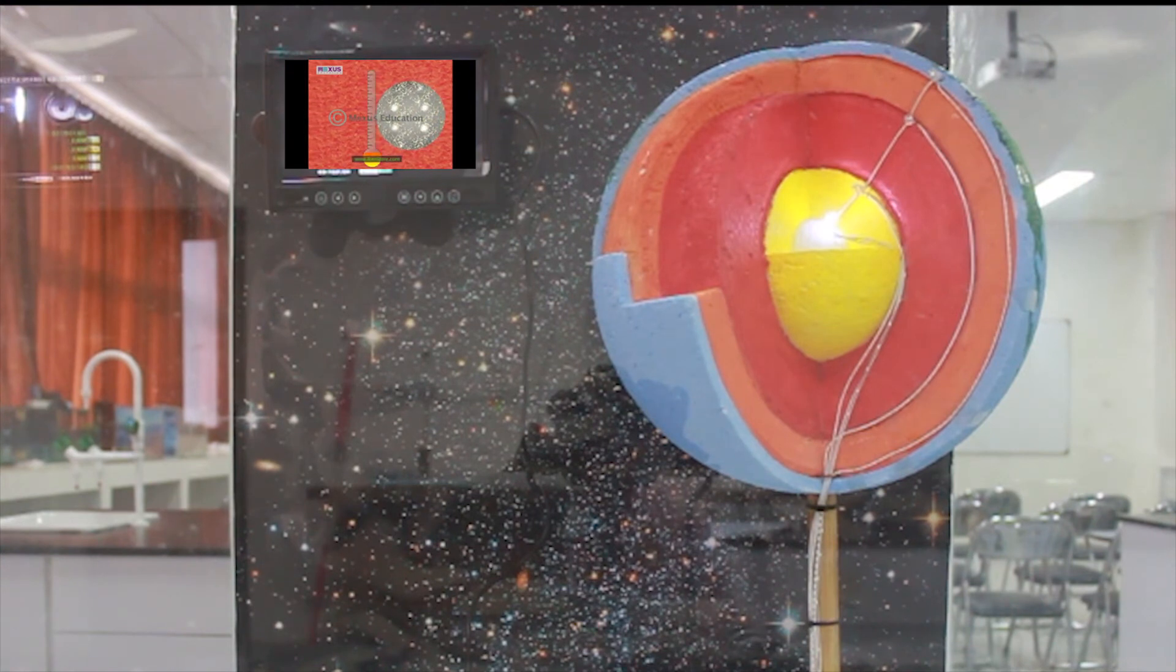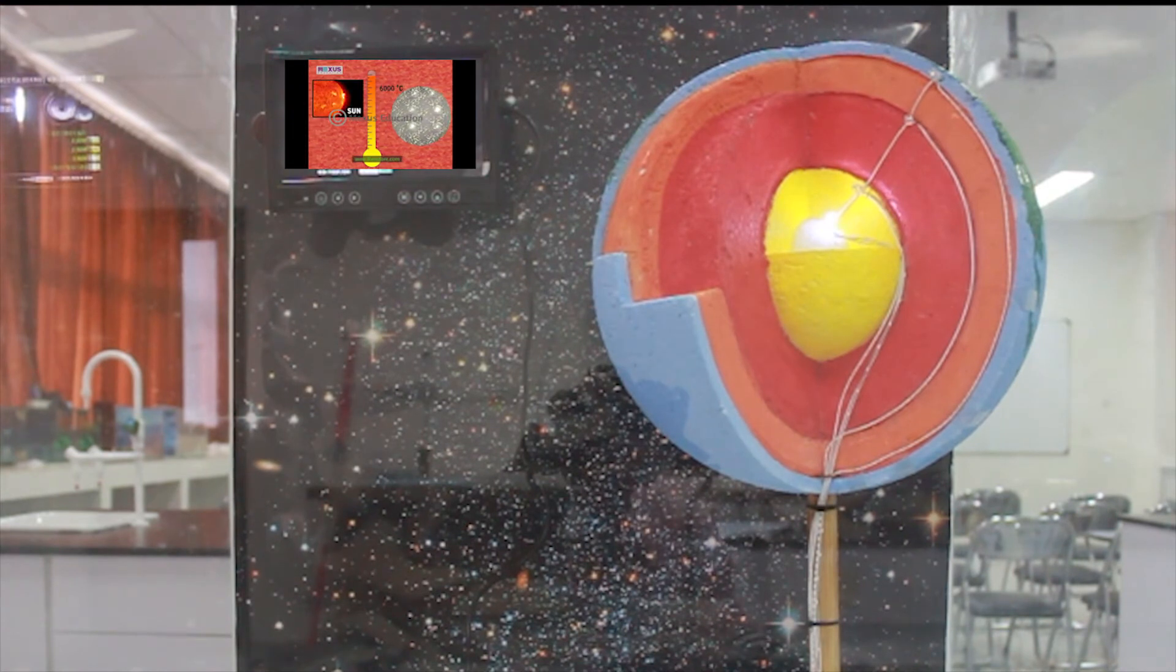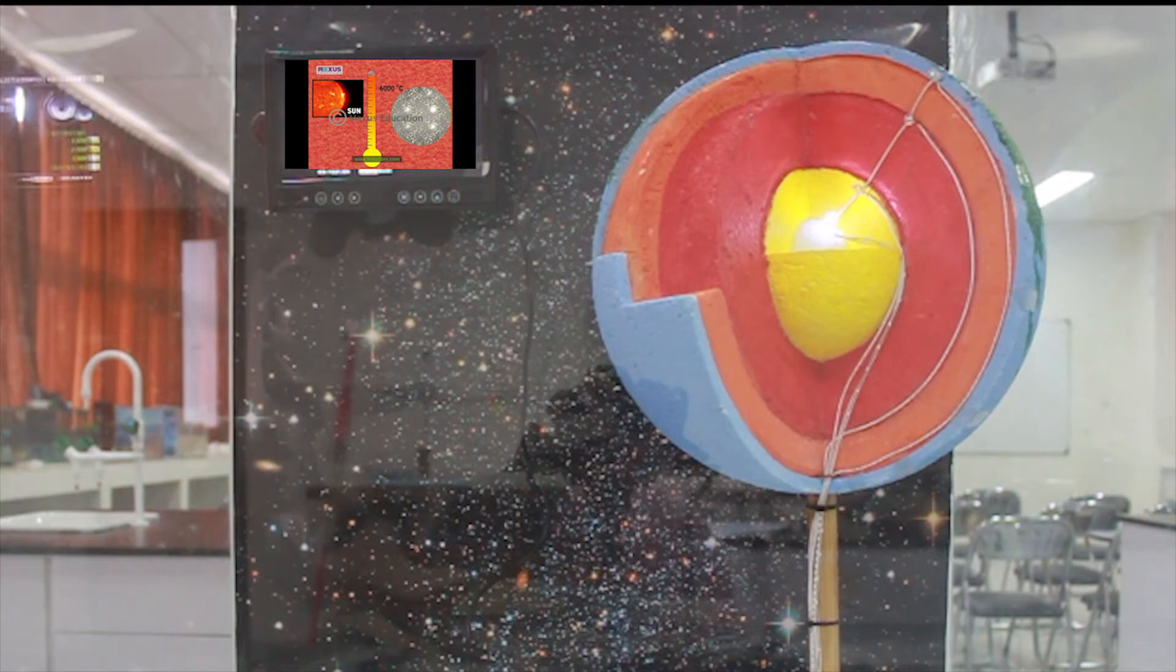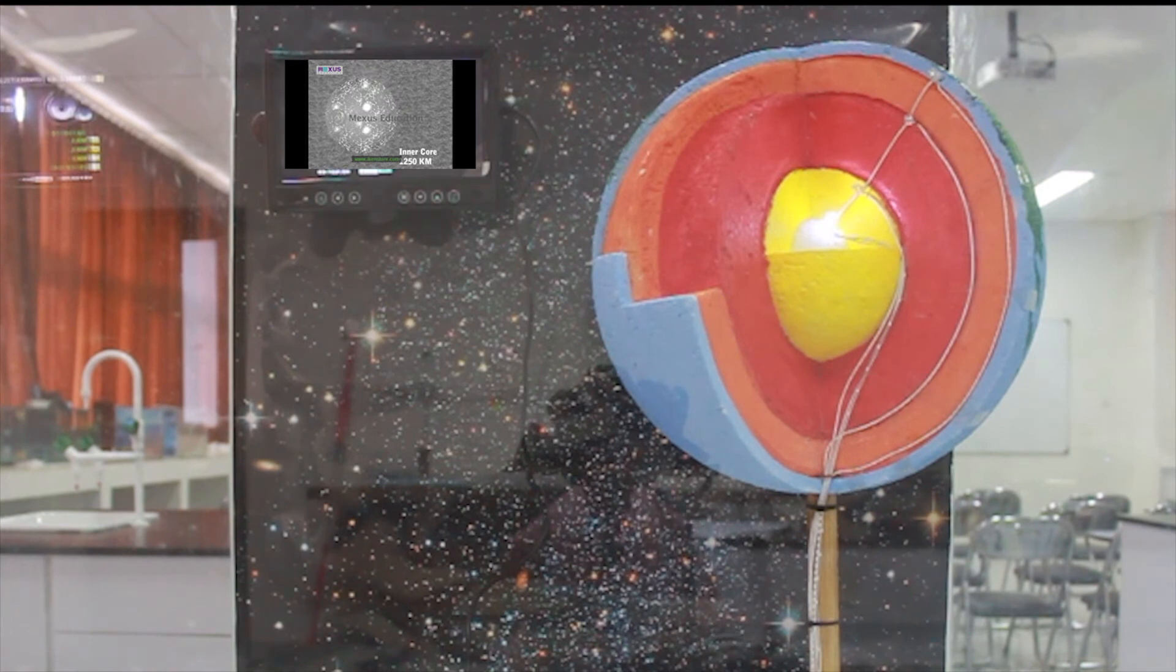The inner core has temperature around 6,000 degrees Celsius. This is nearly the temperature of the Sun's surface. The inner core has a depth of 1,250 kilometers.